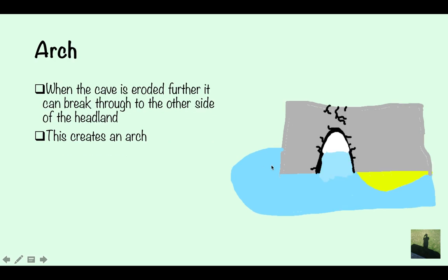Next you have the arch. When the cave is eroded further, it can break through to the other side of the headland, and this creates an arch. So it's gone all the way through. You've got the sea going all the way through. You can see the sky, so it's obviously an arch. It's broken all the way through, and the headland has now got an arch in it.